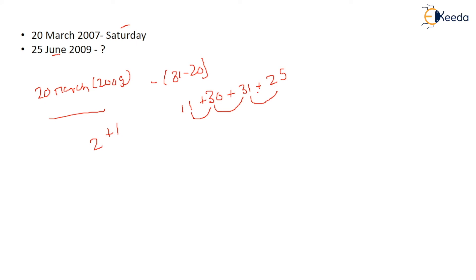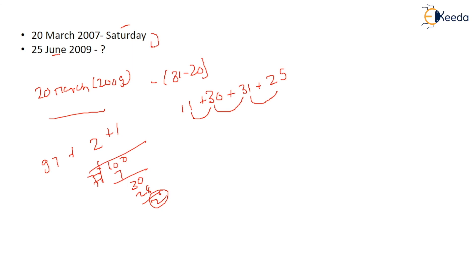Adding up: 11 + 30 + 31 + 25 = 97, plus 3 = 100. Dividing 100 by 7: 98 divides evenly, remainder is 2. Add 2 days ahead because you are going forward. Saturday plus 2 gives Sunday, Monday. So 25 June 2009 is Monday.